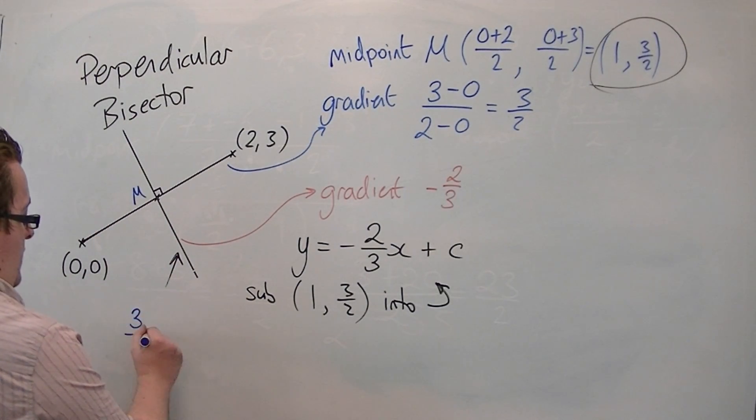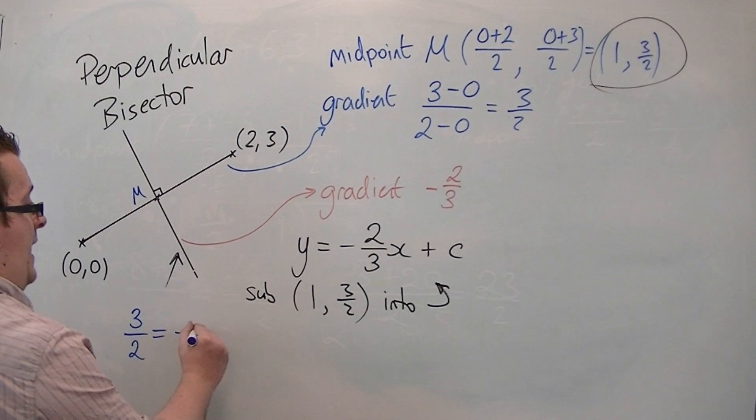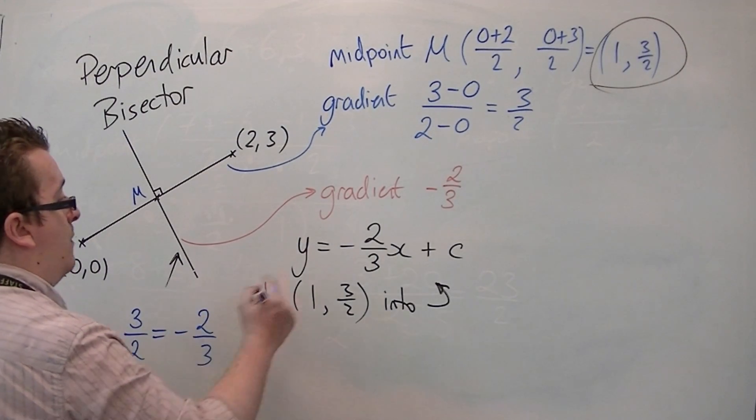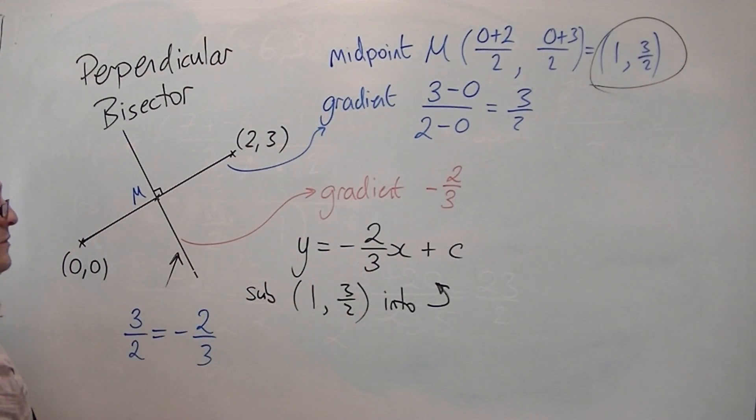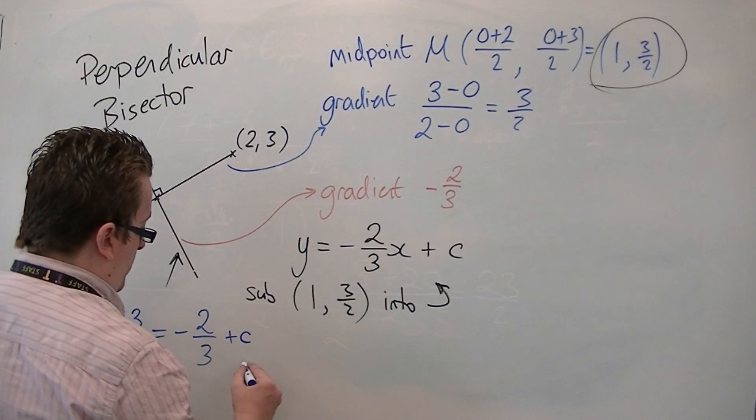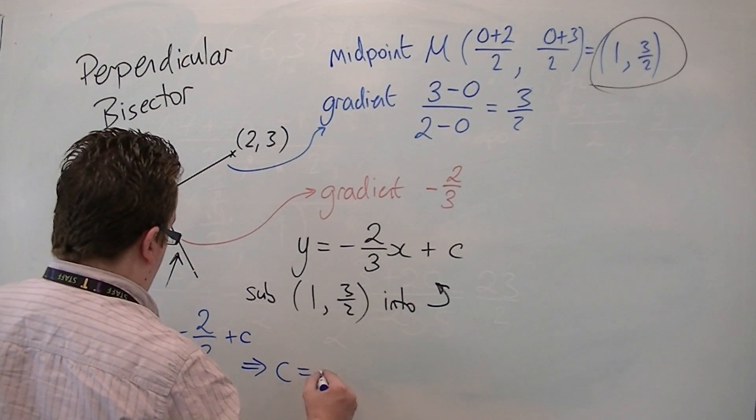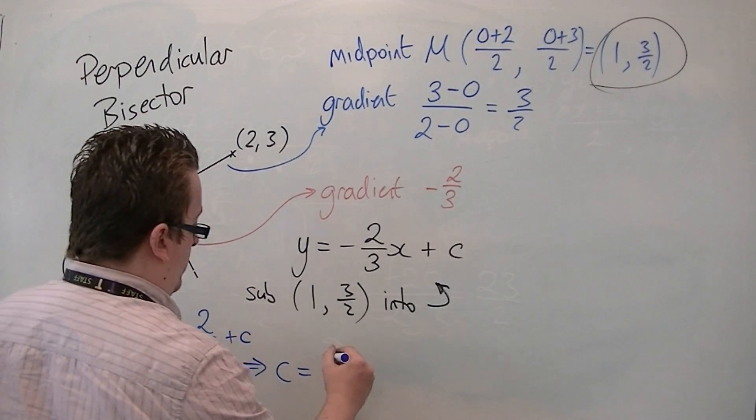So, y is 3 halves, x is 1, so minus 2 thirds times 1 is just minus 2 thirds, plus c. So, c is 3 halves plus 2 thirds.